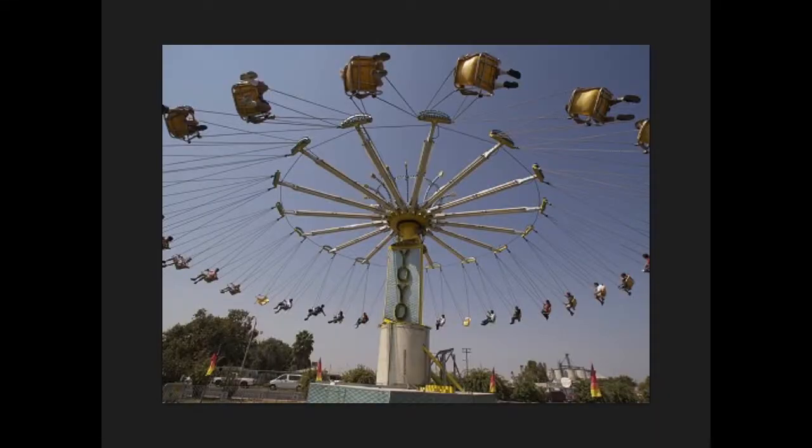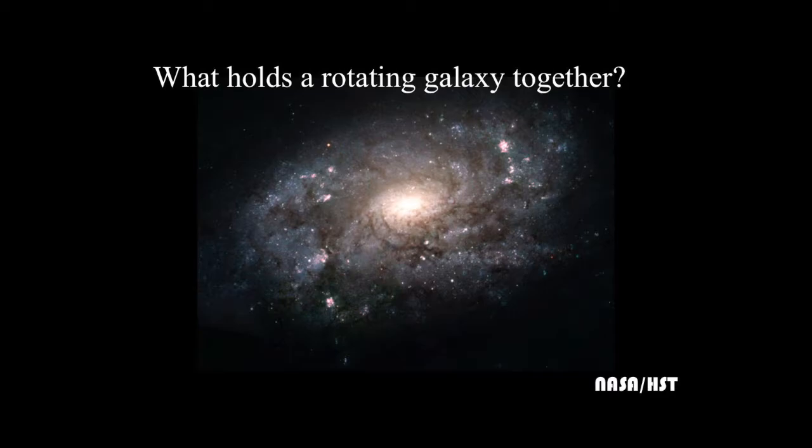We know that spinning things have a certain property. We can go to Cedar Point or some other amusement park and we see spinning things. We notice that in order for the spinning things not to fly off away from the center, they have to be held there by something, by ropes, by cables. So where are the ropes? What's holding the galaxy together?